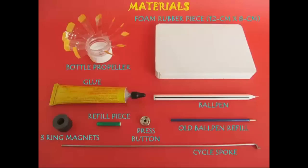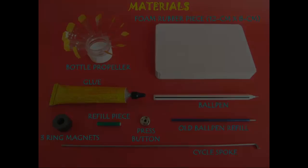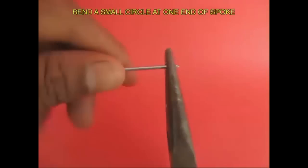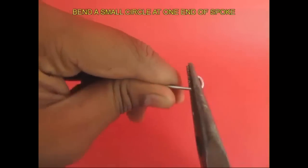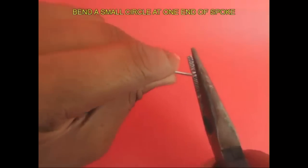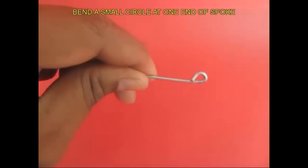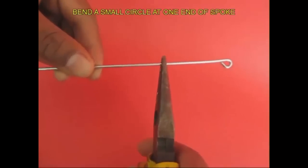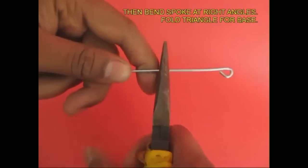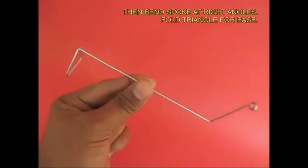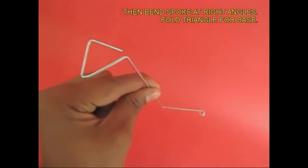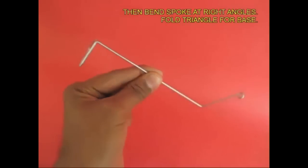First, take the spoke and at one end bend it into a small circle. This circle should be small enough so that you can fit the press button on it. Then bend the spoke at right angles, and then fold the triangle for the base. This is how it should look like after you have bent it. This is the base and this end is for fitting the button.